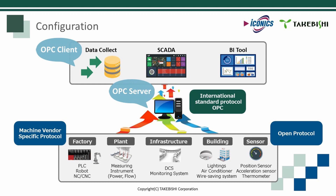OPC is generally used in the following configuration. In OPC communication, a client-server system is used. The OPC server is an industrial communication software product that reads and writes data by connecting to the control device, such as a PLC. On the other hand, OPC clients, like a SCADA product, request data from the OPC server and utilize it in various applications.